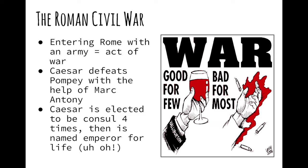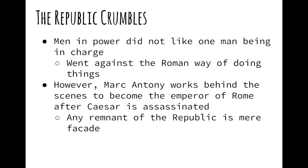Despite the rules that consuls could only serve two consecutive terms, Caesar was elected and served as consul four consecutive times, and then the people attempted to crown him emperor for life. However, the men in power realized that they were reverting back to absolute rule and felt that that did not bode well for their profit margins or influence. Thus, they assassinated Julius Caesar, but underestimated his ally Mark Antony, who was later crowned emperor as Caesar Augustus. While the elected portion of the government still ran, it was more of a figurehead for the sake of popular peace of mind and maintenance of tradition, rather than a body with real power.